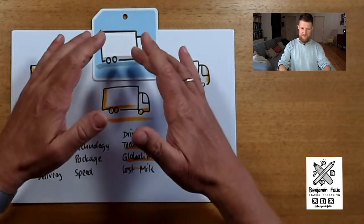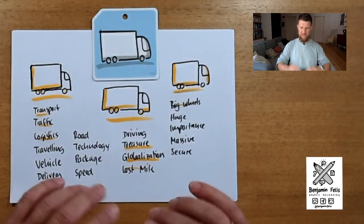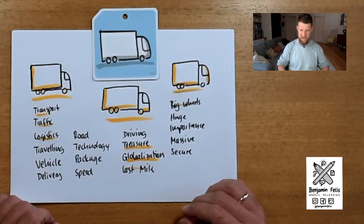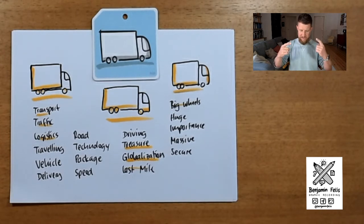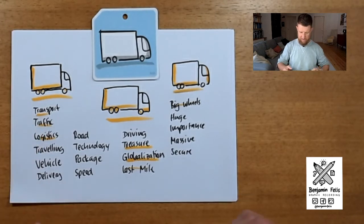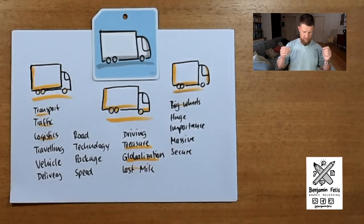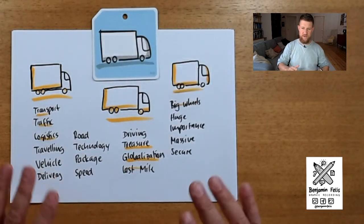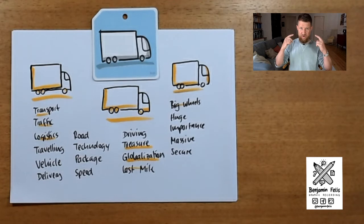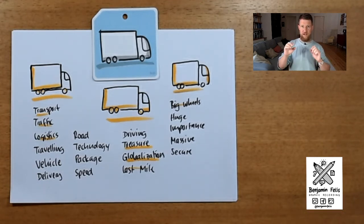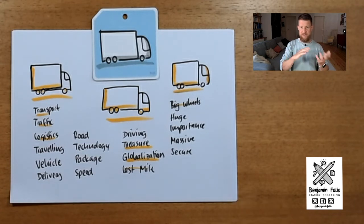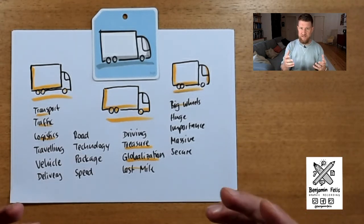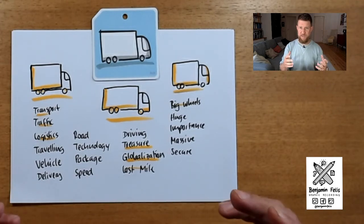Now, next time I see a truck, I think of all the expressions I found. This way I can train myself so that the next time I need to draw a symbol — for instance, for logistics, globalization, or delivery — it's quite easy: I'll just take the truck. This is a really nice way to train your visual mind to think more abstractly and more easily find a symbol for an abstract term like leadership or transformation.